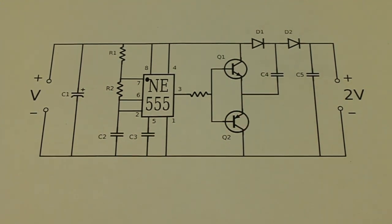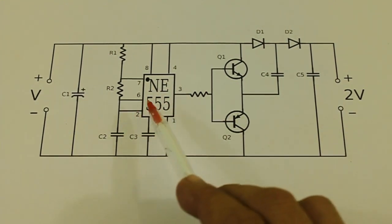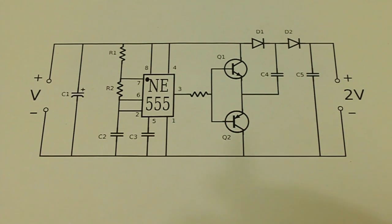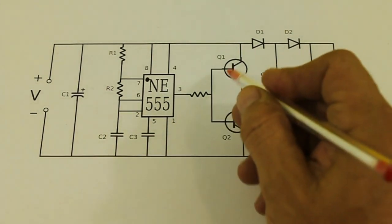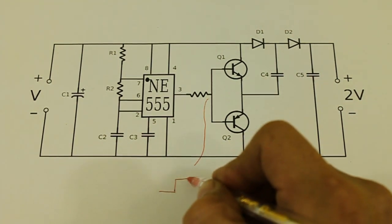How it works? This part at the left is an oscillator based on the 555 chip and it will produce a train of pulses. So at this point at the base of the transistors we will have a square wave like this.